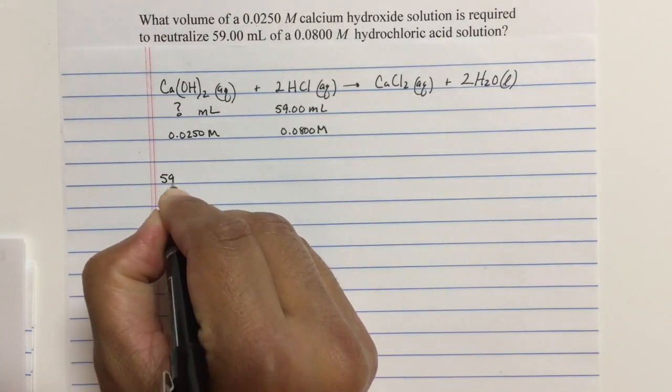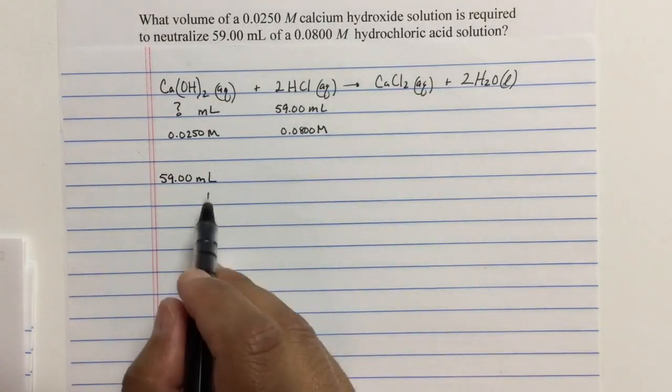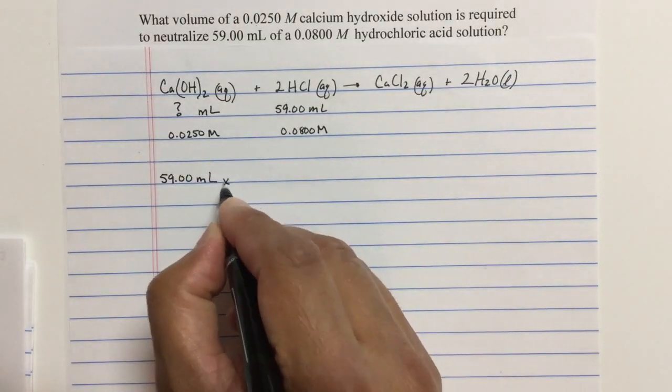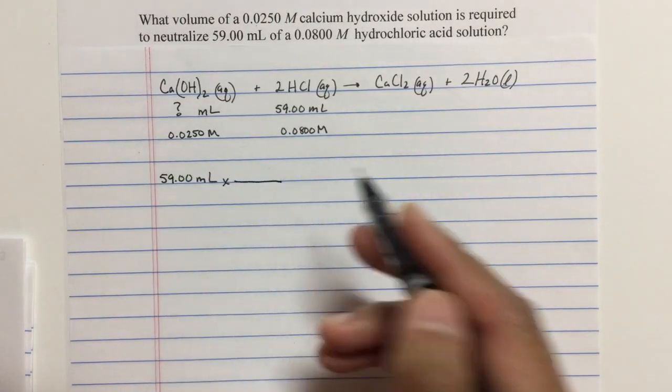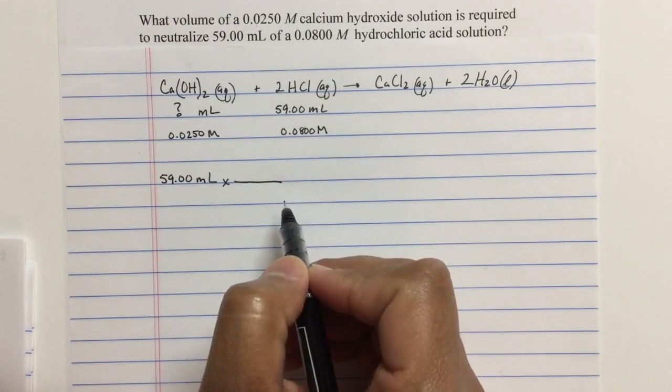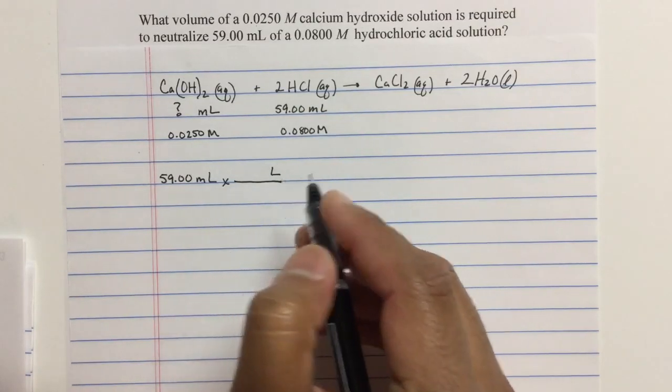I don't have the grams of HCl, but I do have the volume. I'm going to use the volume to convert to moles. I can do that if I know the molarity, which I do. Molarity is in moles per liter, so I'm going to have to convert to liters first.